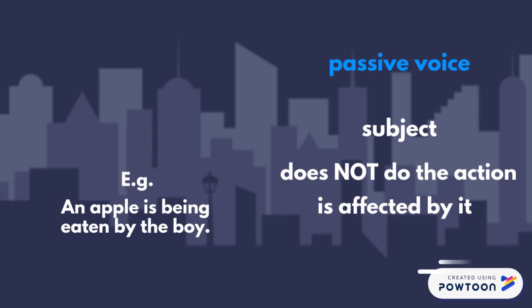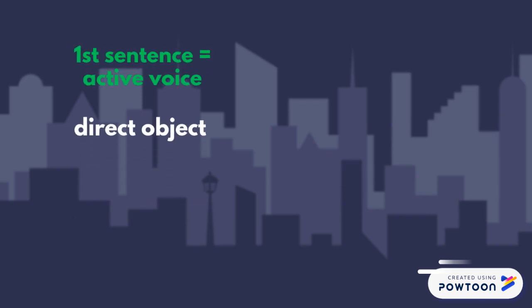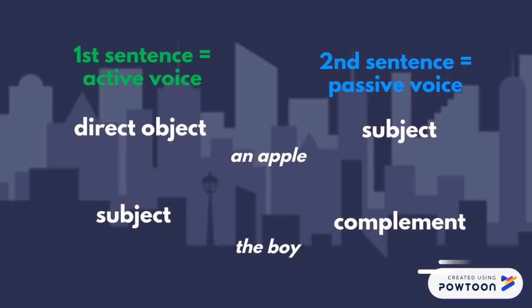So it's not the apple who does the action of eating, of course. As you can see, what was a direct object in the first sentence — an apple — has become the subject of the second sentence at the passive voice. And the first subject, the boy, has become a complement in the second sentence.